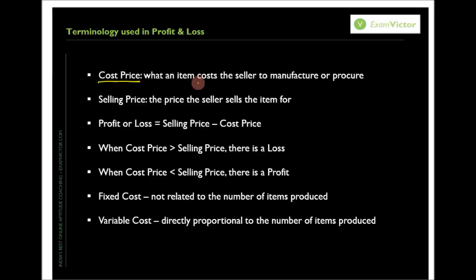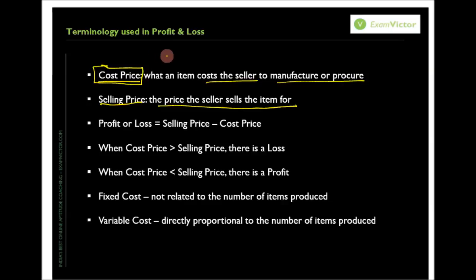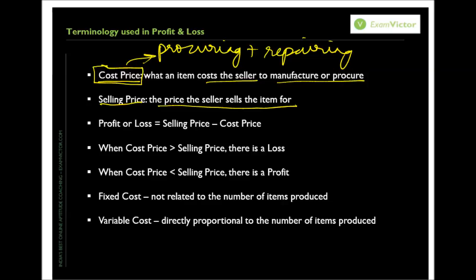The first is cost price — what the item costs the seller to manufacture or procure. For example, if you are a seller of second-hand scooters, the cost price is the cost involved in procuring an old scooter plus repairing it. If the scooter had some flaws and you had to get it repainted, all those repairing costs are also included in your cost price, because you had to do all this work to make it worthy to sell.